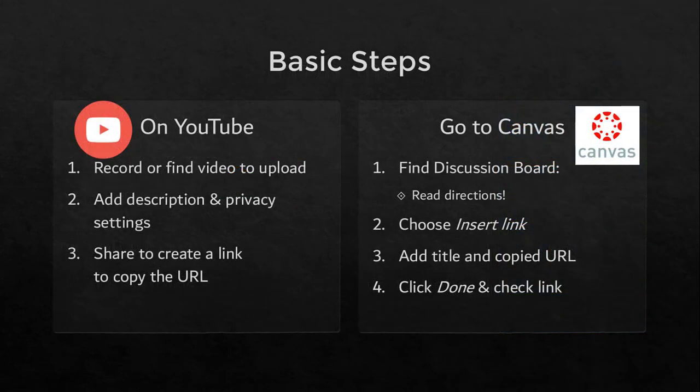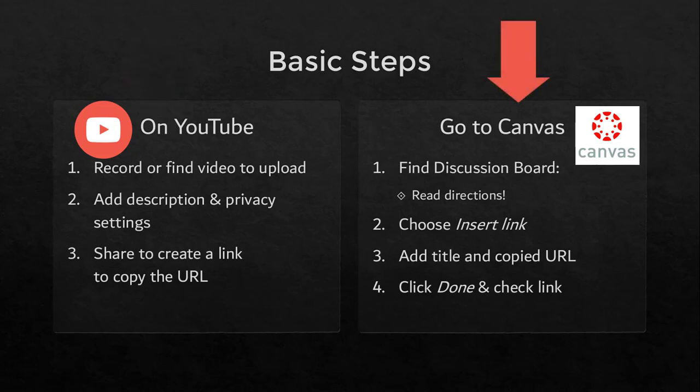Basically, you're going to start on YouTube, get information, and then put it in Canvas. Starting on YouTube, the first thing you're going to do is either record a new video or find a video that you've already recorded to upload. Then you'll need to add description and privacy settings in YouTube. Then you'll click share, and that will create a YouTube link, so you'll be able to copy that URL. When you share it, it creates the link, and now you can put that URL over in Canvas.